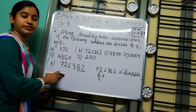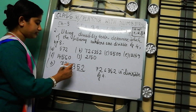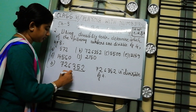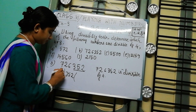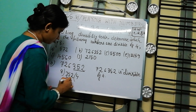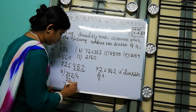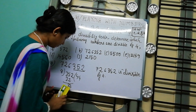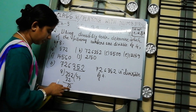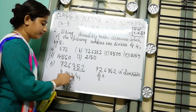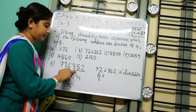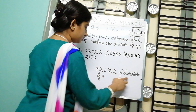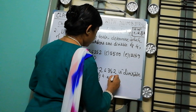Now we check whether 726352 is divisible by 8. For divisibility by 8, we check the last 3 digits, which are 352. We divide 352 by 8 and get 44 with remainder 0. So 352 is divisible by 8, and therefore the whole number 726352 is divisible by both 4 and 8.